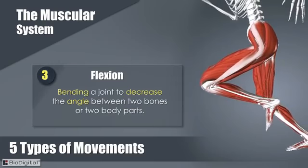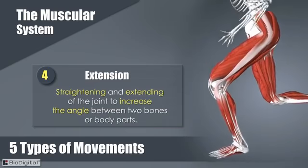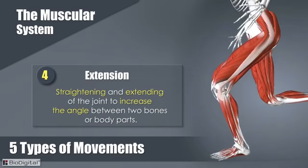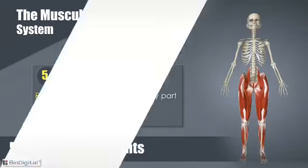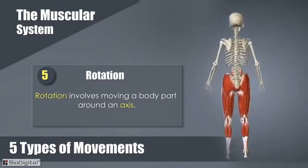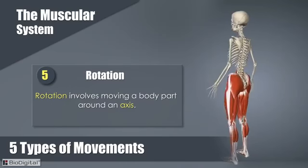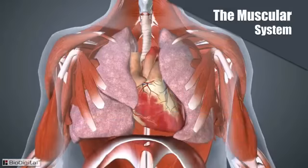Flexion means bending a joint to decrease the angle between two bones or two body parts. Extension is the straightening and extending of the joint to increase the angle between two bones or body parts. And lastly, rotation involves moving a body part around an axis.